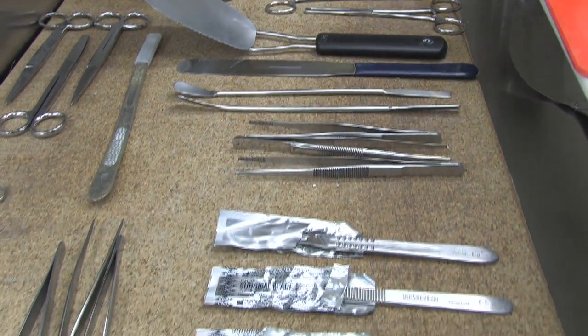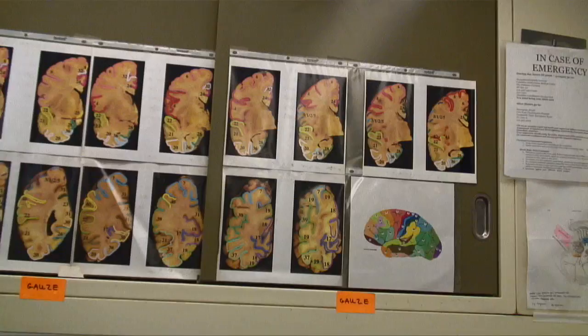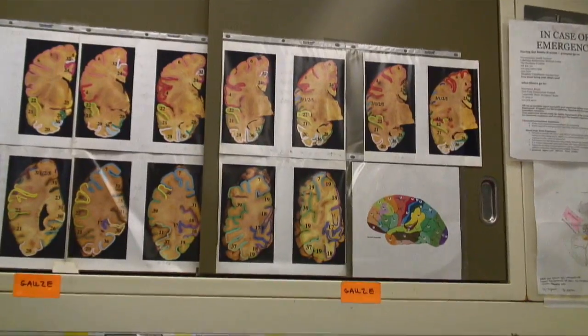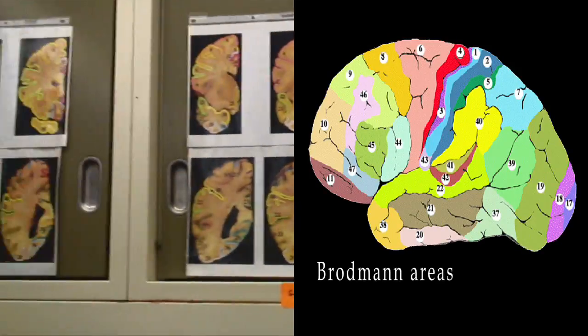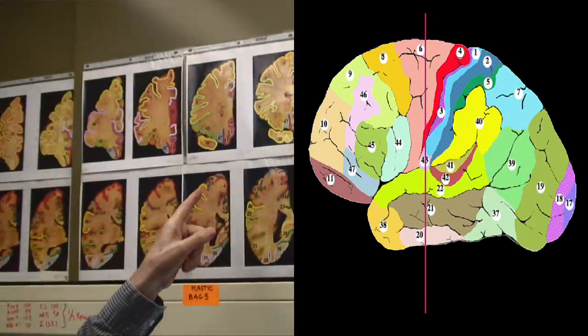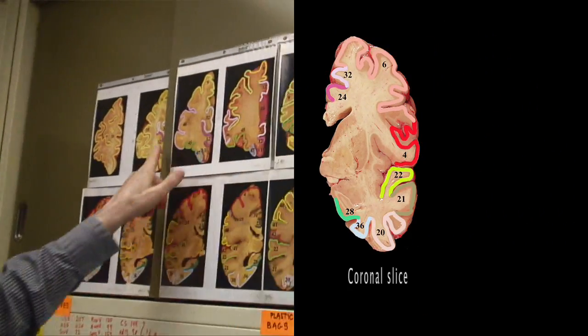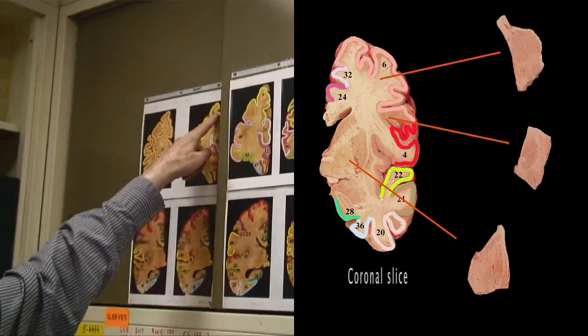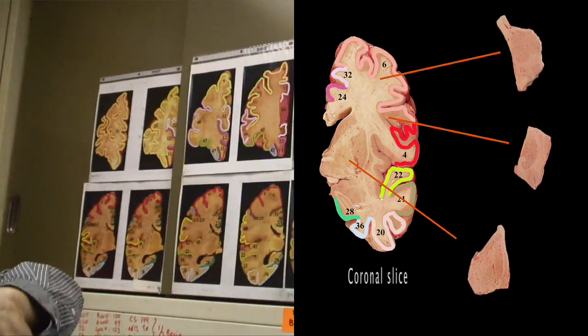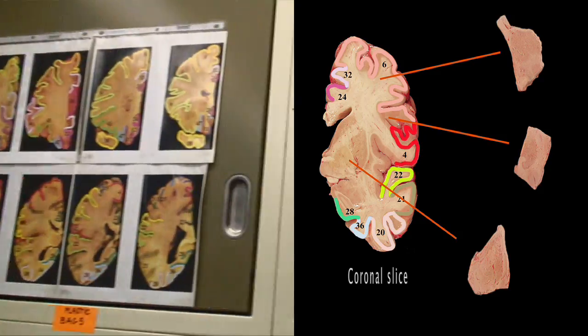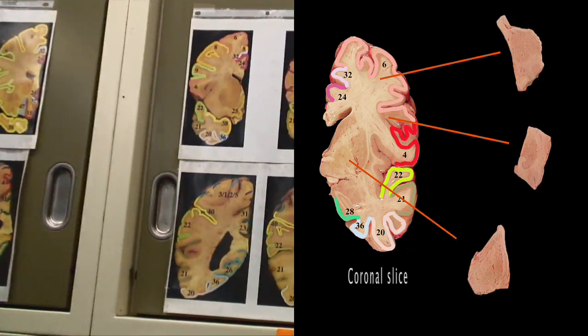We dissect and each block is taken according to the Brodmann map — BA10, BA4, BA6, BA17, BA18.